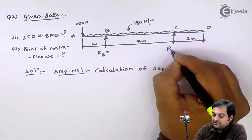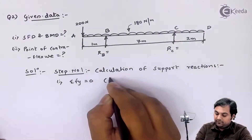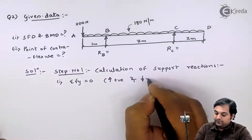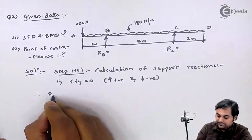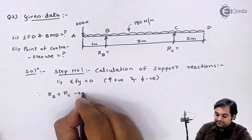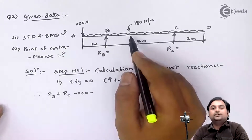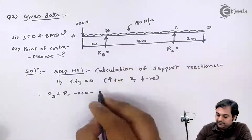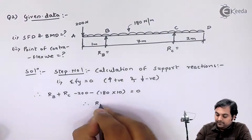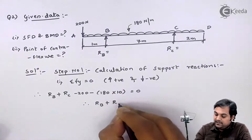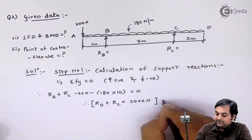Since I have supports at B and C, I will be calculating reaction at B and reaction at C. The first condition: summation of FY is equal to 0, where upward force is positive and downward force is negative. So here I have RB plus RC minus 200 minus 180 into 10 (since the UDL is acting over the entire span of 10 meters) is equal to 0. Therefore RB plus RC equals 2000 Newton. I will keep this as my first equation.